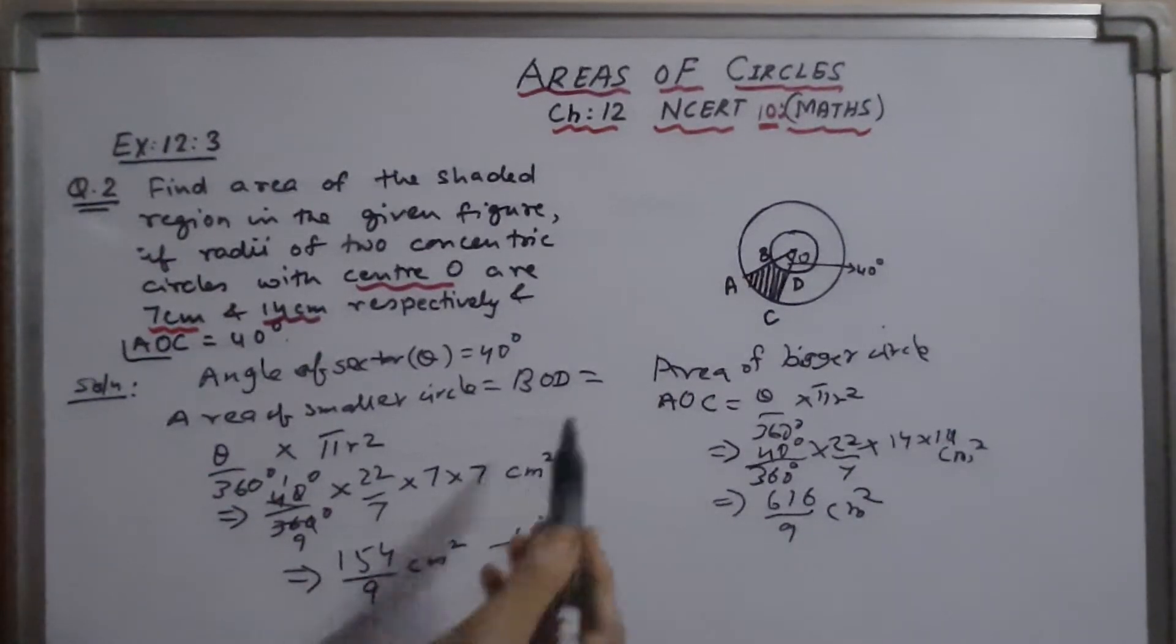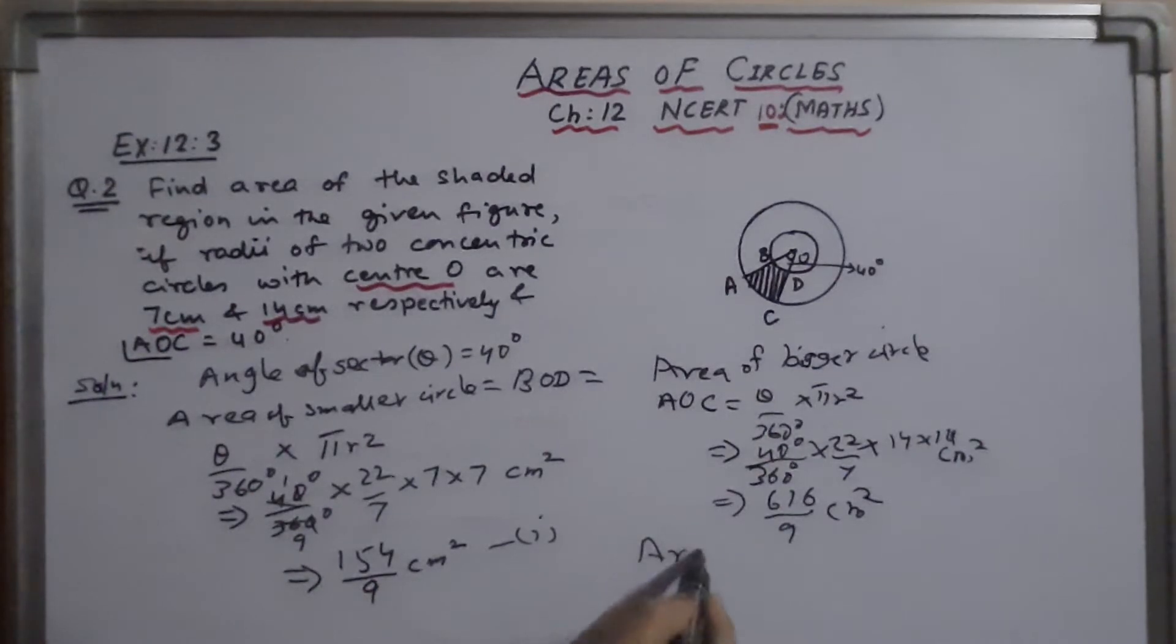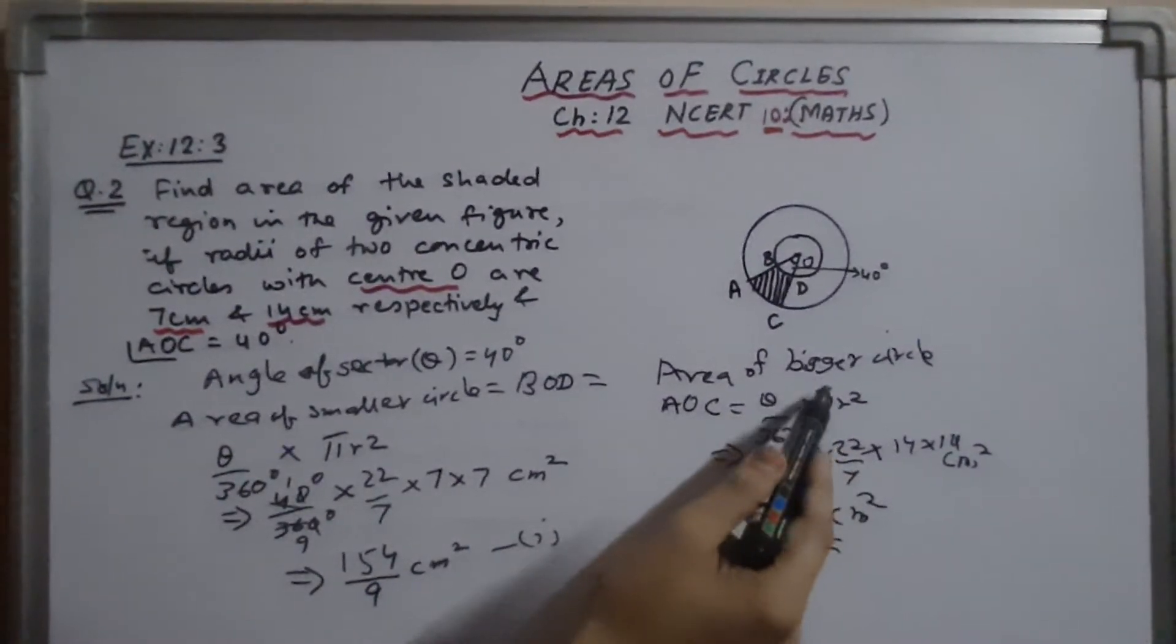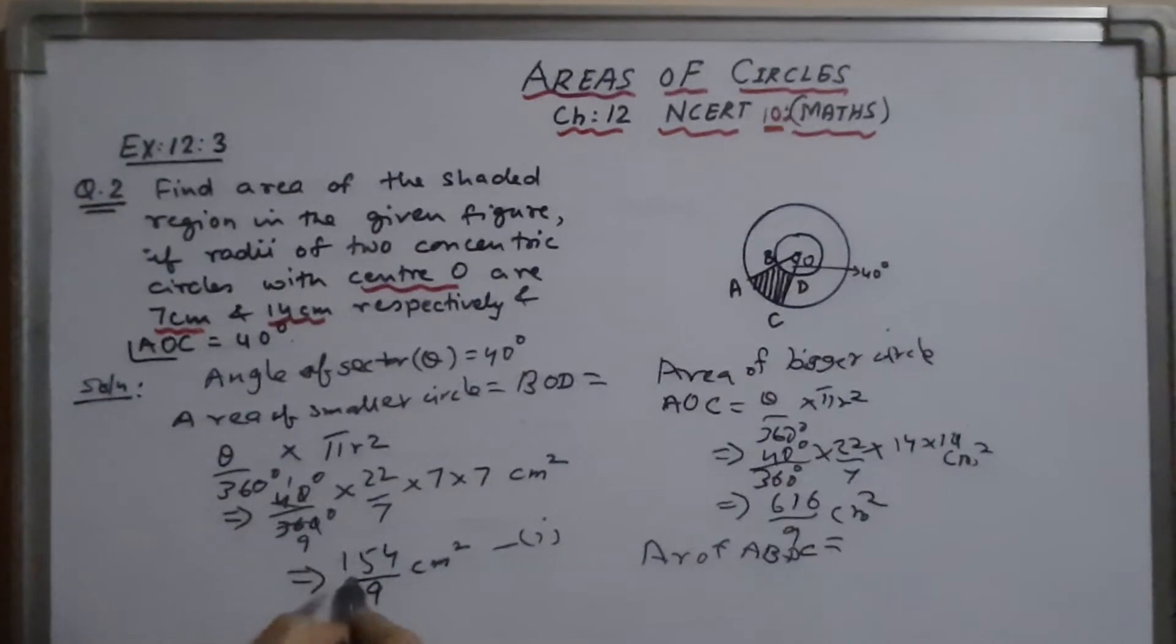Now finally, we have to find the area of shaded region, that is area of shaded region ABDC. So it will be area of bigger circle minus area of smaller circle.